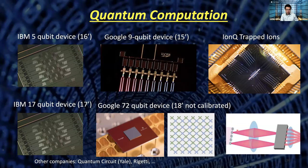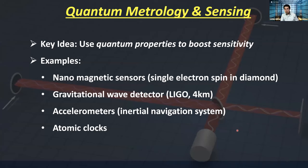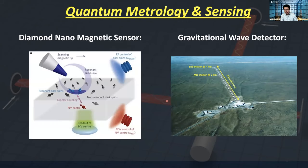In addition to computing and communication, quantum also has applications in quantum metrology and sensing. For physics audiences, you probably heard about gravitational wave detection a few years ago — which won the Nobel Prize — using the LIGO device. The latest version actually incorporates something called squeezed light, a non-trivial quantum state that enhances sensitivity. LIGO is the largest-scale quantum device. At the extreme small scale, you can use nanodiamond sensors — essentially the smallest magnetic sensor you can build, down to a single electron.